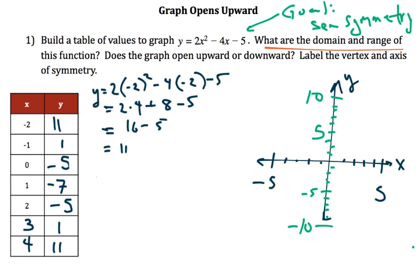And this should be neat enough for our purposes. So I'm going back to 2 and then positive 11, negative 1, 1, 0, negative 5, 1, negative 7, 2, negative 5. There's that part of the graph that I would have just seen if I graphed it, only going up here, and that's not enough detail because I really want to see that symmetry. So now I'm back to 3, positive 1, and then 4, 11.